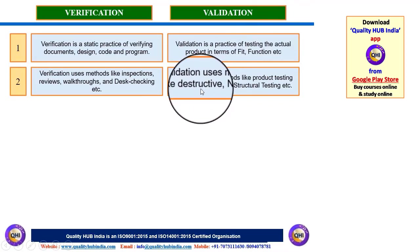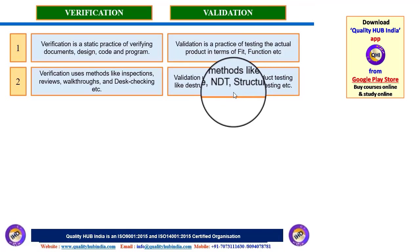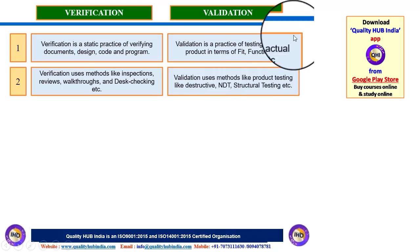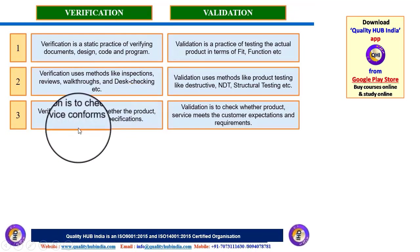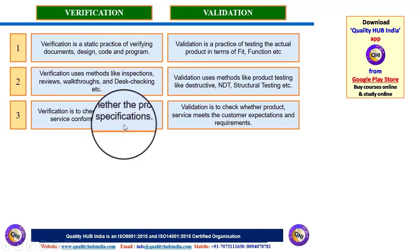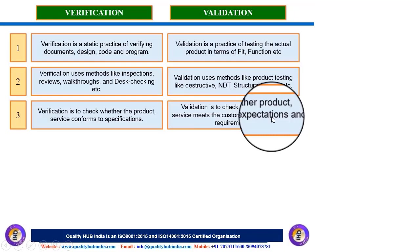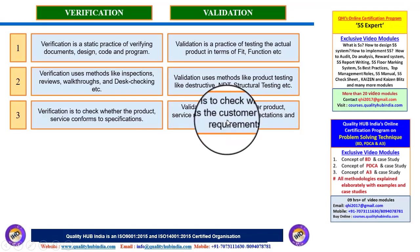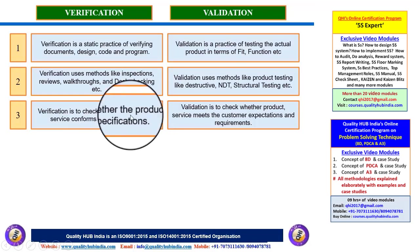Validation, on the other hand, is done through testing — performance testing, destructive testing, or non-destructive testing — where we actually use the product to check its applicability in a real scenario. So broadly, verification uses inspection while validation uses testing. The third difference: in verification we check if the product or service conforms to specification, whereas in validation we check if the product or service meets the customer's expectation and requirement.